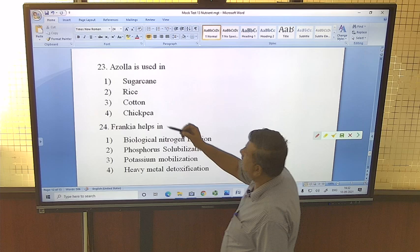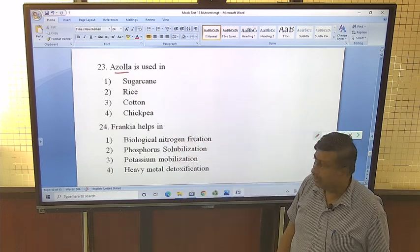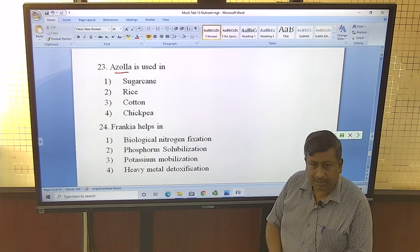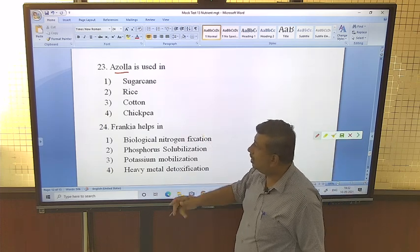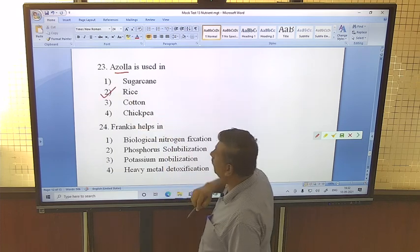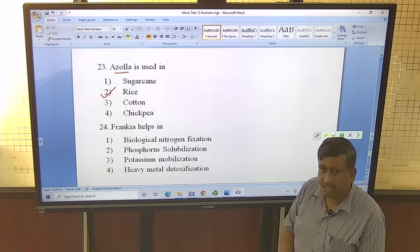Azolla is used in - Azolla actually, nitrogen fixing plant, and it requires water. Without water, it cannot survive. Out of this crop, rice survives in rice. Rice requires water. That's why Azolla is used for nitrogen fixation in rice.